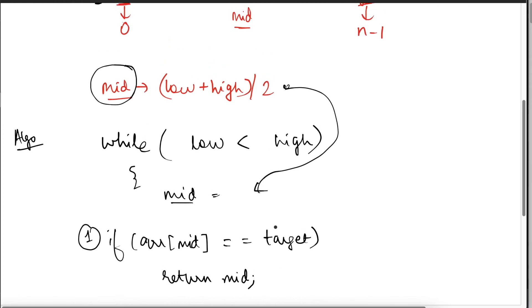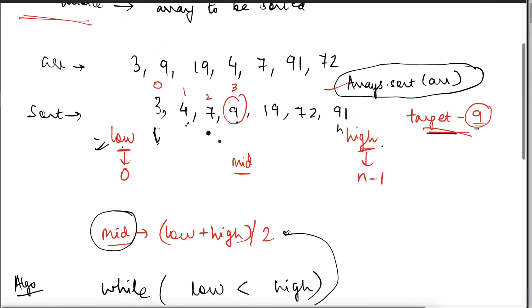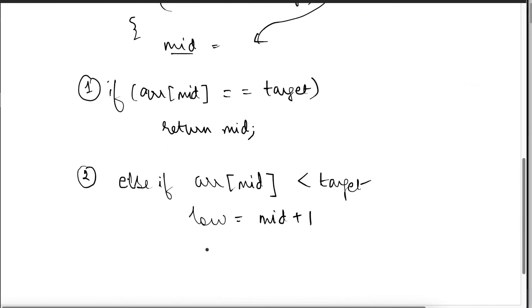So I will do low equal to mid plus 1. So now I am again increasing. So now again I am trying to manipulate the problem space in such a way so that wherever there is a more probability of the target element to lie, I am going to adjust the low pointer to that place. So that is why there is no point in searching for an element before the mid. Because the mid itself is lesser than the target means it still has a long way to go. So there is no point in searching before mid. We have to search after mid. Because we have to search after mid, that is why I have made low equal to mid plus 1.